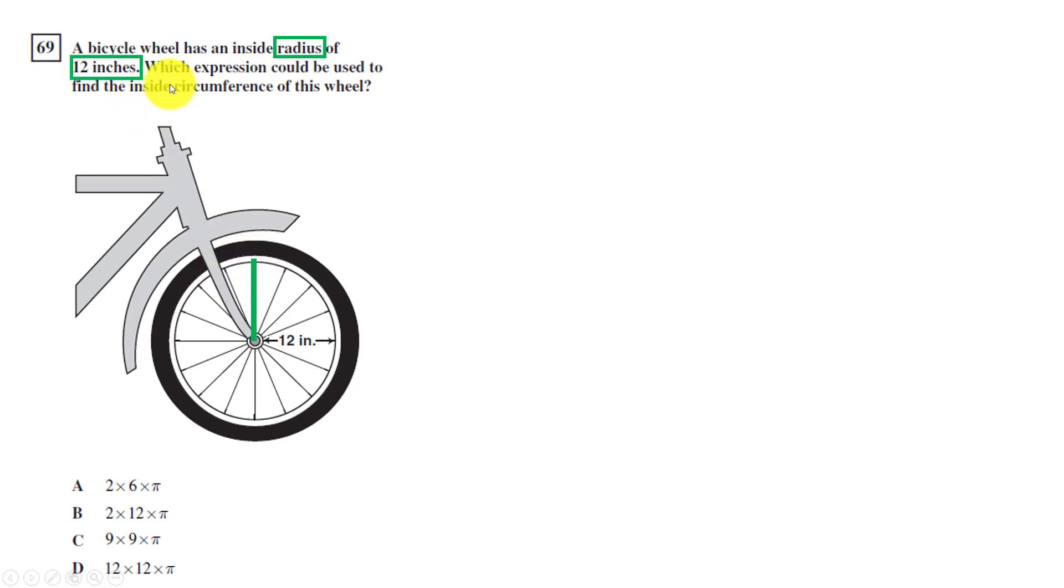12 inches is also very important. Which expression could be used to find the inside circumference of this wheel? The inside circumference is this highlighted green circle. This is kind of like the question we did before. We know the equation for circumference. The equation for circumference, the most common one used, is C equals 2 times pi times R, or 2 pi R. I can substitute 12 in for the R. So now I have 2 times pi times 12.